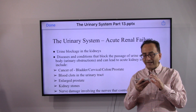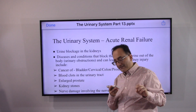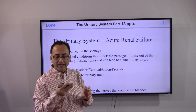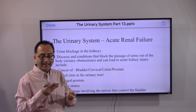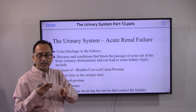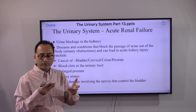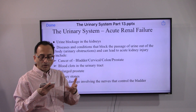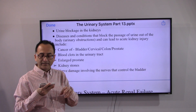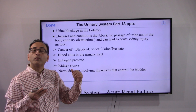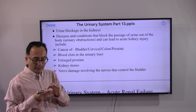Urine blockage in the kidneys can also cause acute kidney injury. Diseases and conditions that block the passage of urine out of the body — called urinary obstructions — include cancer, blood clots, an enlarged prostate, kidney stones, and nerve damage, all of which may obstruct normal urine flow.